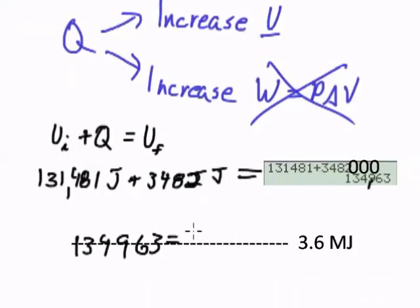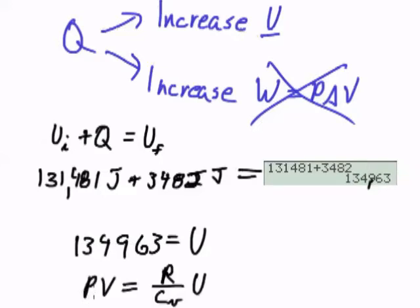And that's going to give us 134,963. And that equals U, the internal energy. And then we're going to use the equation, PV equals NRT equals R over C sub V U equals 2 over the degrees of freedom times U.